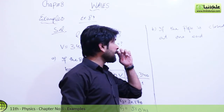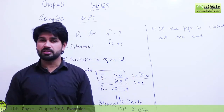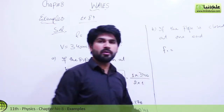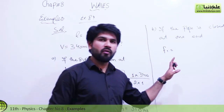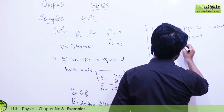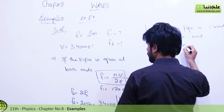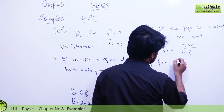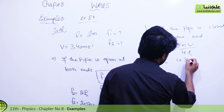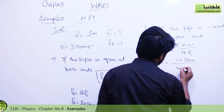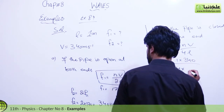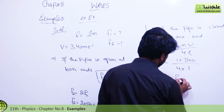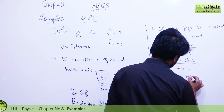When the organ pipe is closed at one end, the formula is f1 = nV / 4L. Substituting the values: n = 1, V = 340, and L = 1, we get f1 = 340 / 4 = 85 Hz. This is the first mode frequency.